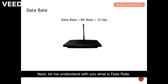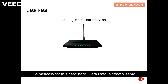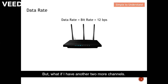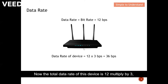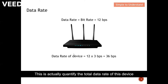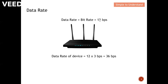Now let's understand data rate. For a single-channel router, data rate is exactly the same as bit rate — 12 bits per second. But if the device has three channels, and each individual channel carries 12 bits per second, then the total data rate of the device is 12 multiplied by 3, which equals 36 bits per second. Data rate quantifies the total throughput of a device, while bit rate refers to one particular channel.